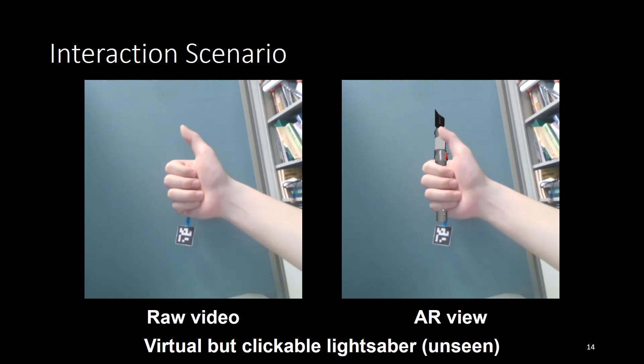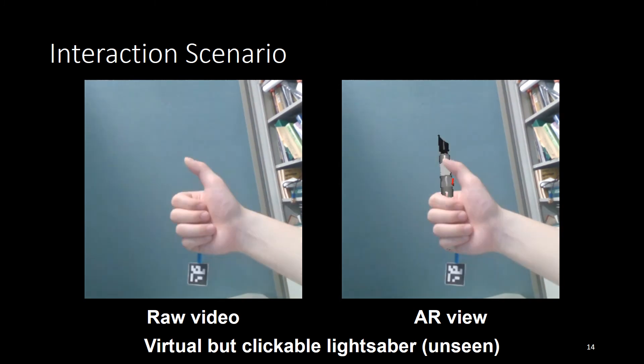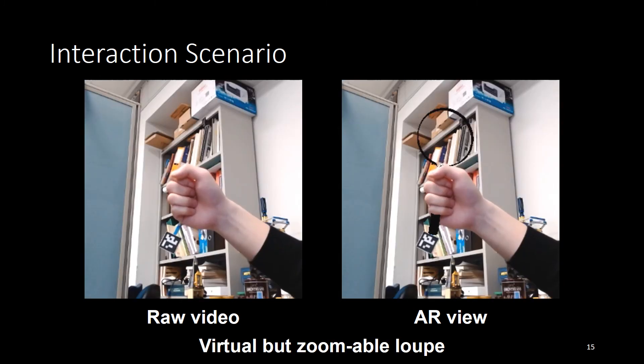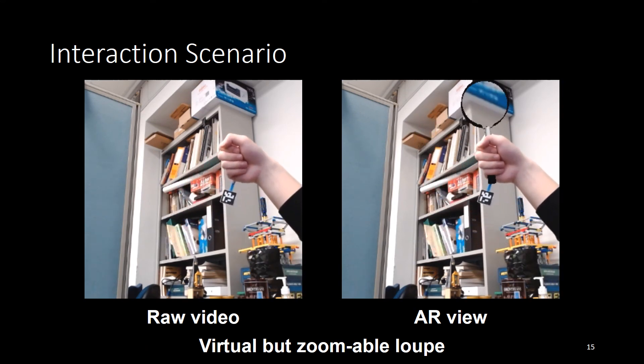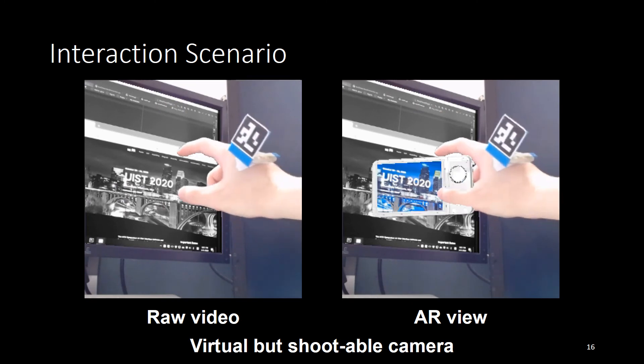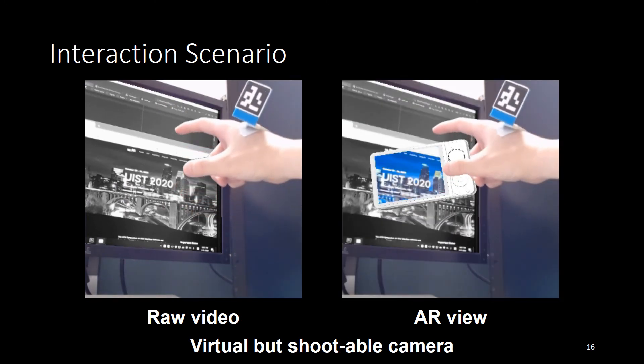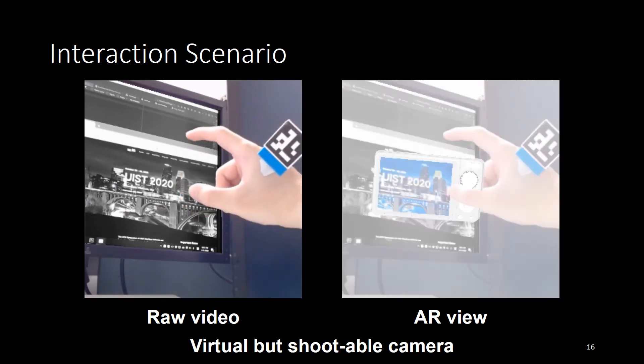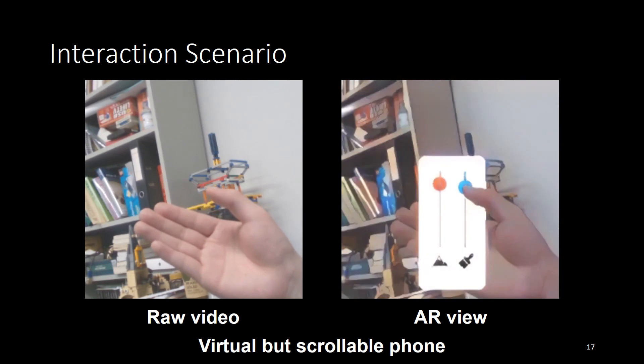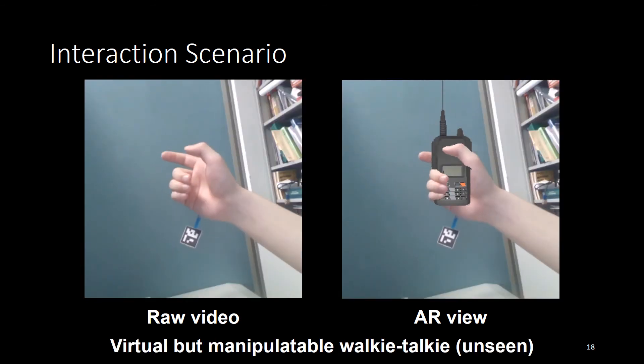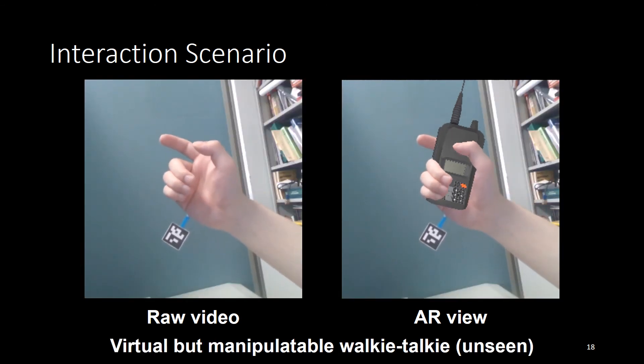For example, a virtual lightsaber, a virtual but zoomable loupe, a virtual but shootable camera, a virtual but scrollable phone, a virtual but manipulatable walkie-talkie.